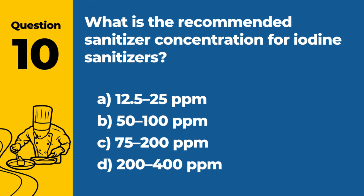Question 10: What is the recommended sanitizer concentration for iodine sanitizers? A. 12.5 to 25 ppm. B. 50 to 100 ppm. C. 75 to 200 ppm. D. 200 to 400 ppm. Answer: C. 75 to 200 ppm. The recommended sanitizer concentration for iodine sanitizers is typically between 75 and 200 ppm.